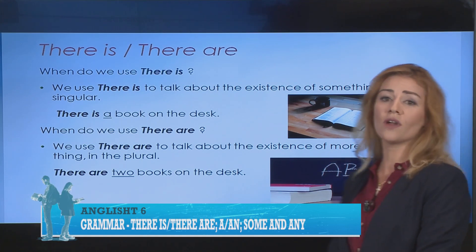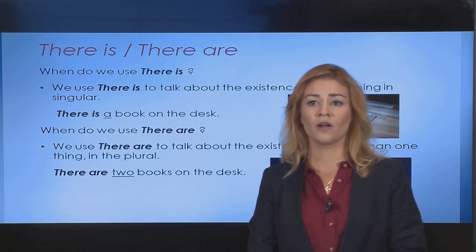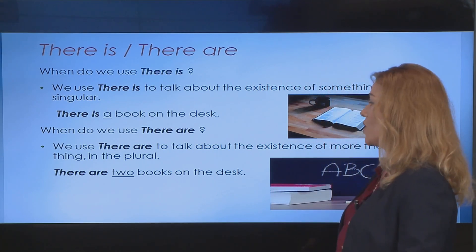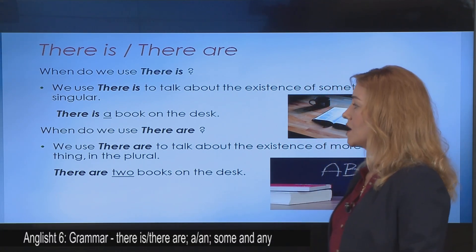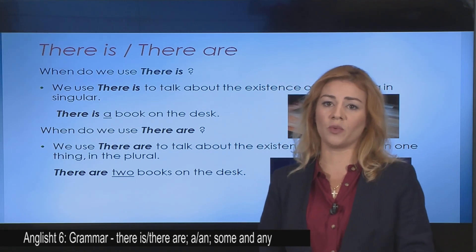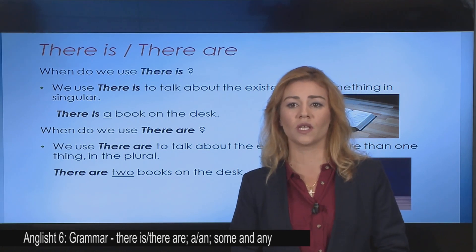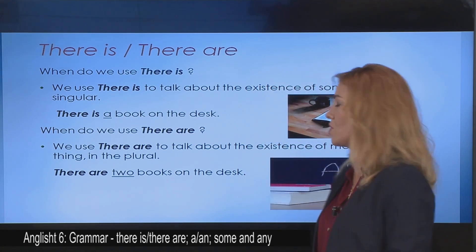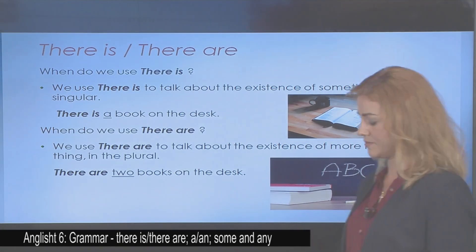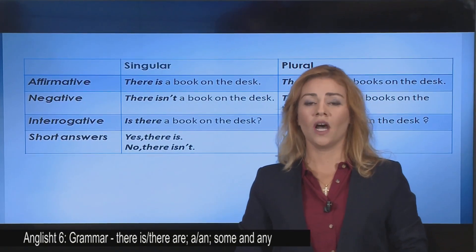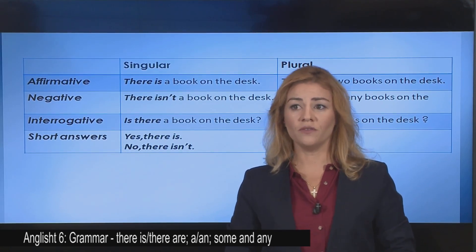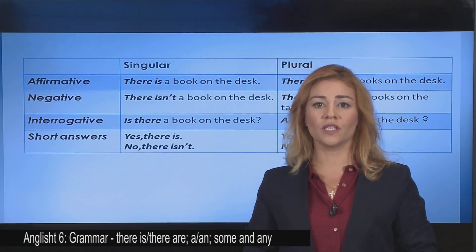When do we use there are? We use there are to talk about the existence of more than one thing in the plural. Ne përdorim there are për të treguar ekzistencën e më shumë se sa një objekti apo një sendi në numrin shumës. So there are two books on the desks. Pra ndodhen dy libra në bita volin. Now let's see how do we use there is and there are in affirmative, negative, interrogative and short answers.